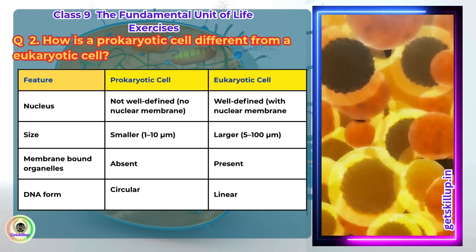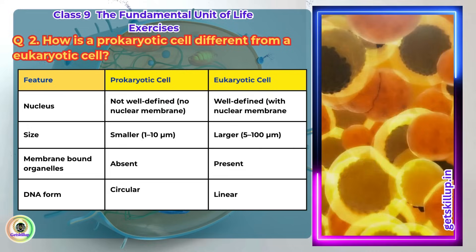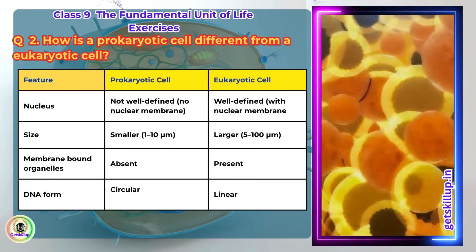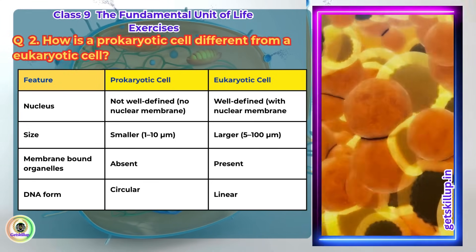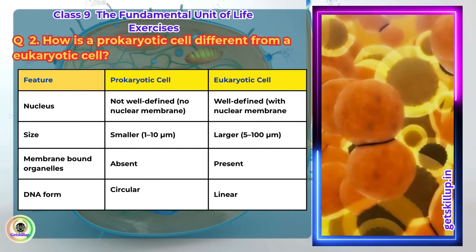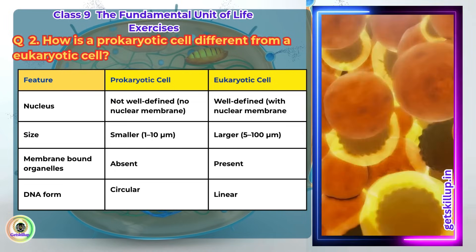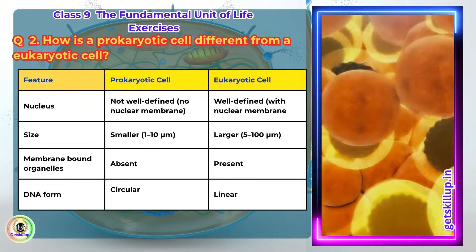Features of eukaryotic cell: Nucleus is well defined with nuclear membrane. Size is larger. Membrane-bound organelles is present. DNA form is linear.